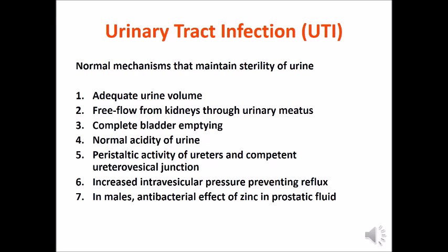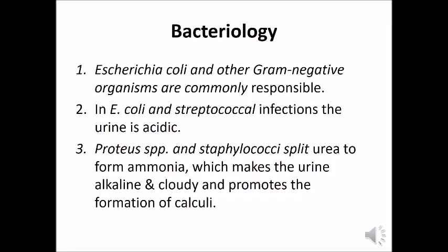E. coli and other gram-negative organisms are commonly responsible for urinary tract infections. In E. coli and streptococcal infections, the urine is acidic. With Proteus and staphylococci splitting the urea to form ammonia, the urine becomes alkaline and cloudy, and promotes the formation of calculi.